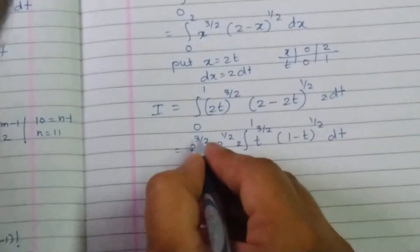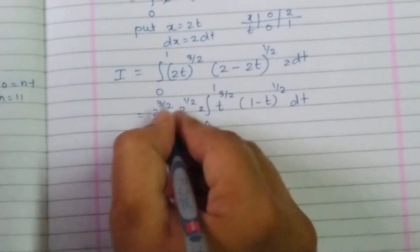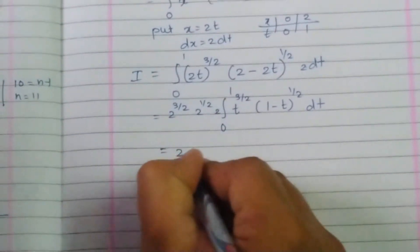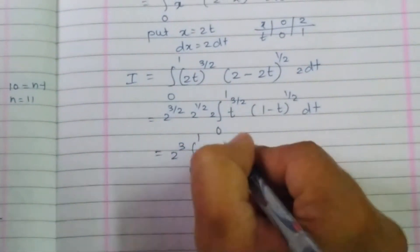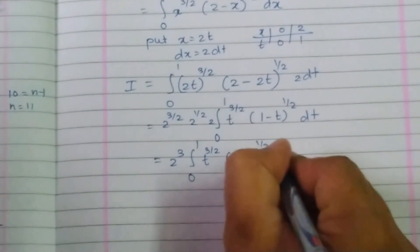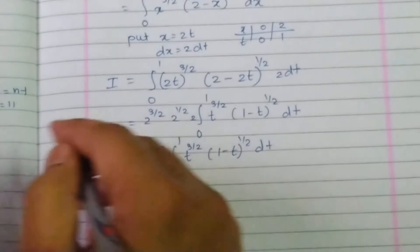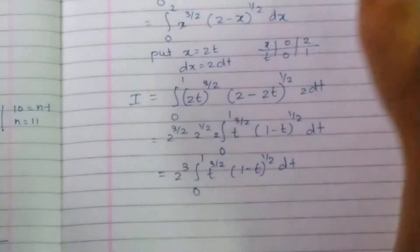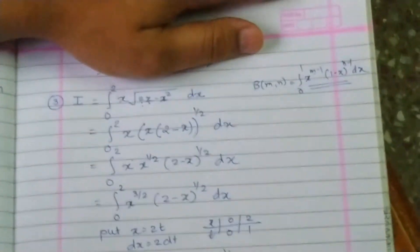So 3 by 2, 1 by 2 then becomes 4 by 2. 4 by 2 means 2, and 2 plus 1 is 3. So 2 cubed, integration from 0 to 1, t raise to 3 by 2, 1 minus t raise to 1 by 2, dt. Now here I have to express in the form of m minus 1 and n minus 1.